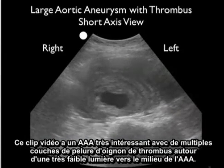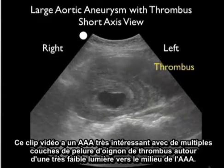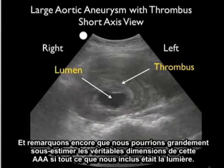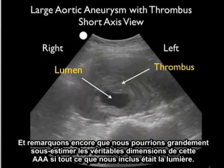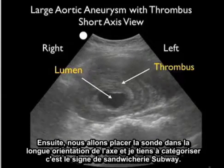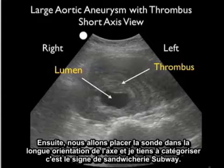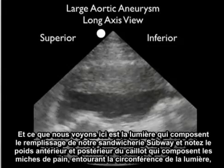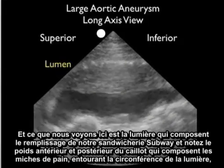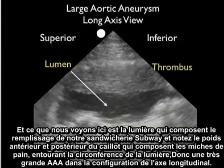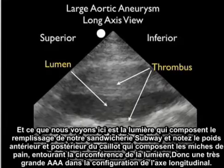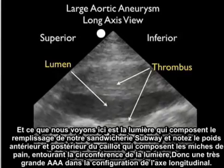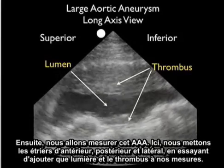This video clip shows a very interesting triple A with multiple onion skin layers of thrombus surrounding a very small lumen towards the middle. Notice that we could vastly underestimate the true dimensions if all we included was the lumen. We see here a very large burden of clot surrounding the lumen circumferentially in a short axis orientation. Next, we're going to position the probe in a long axis orientation — I like to categorize this as the subway sandwich sign — where the lumen makes up the filling, and the anterior and posterior burden of clot makes up the loaves of bread circumferentially surrounding the lumen.